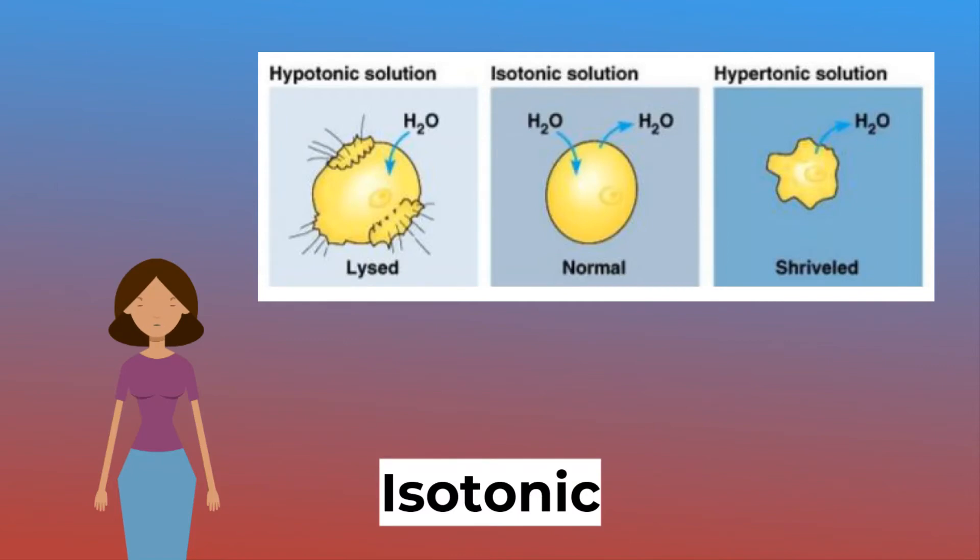Isotonic solution. Water potential in and out of the cell is equal, or at equilibrium, so there is no net osmosis. Nothing would happen. This is the ideal environment for cells.